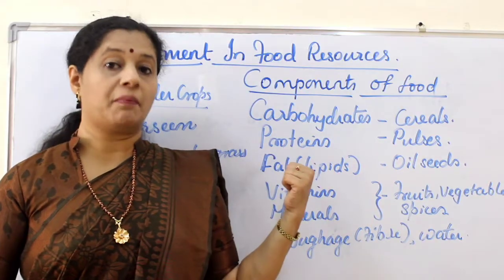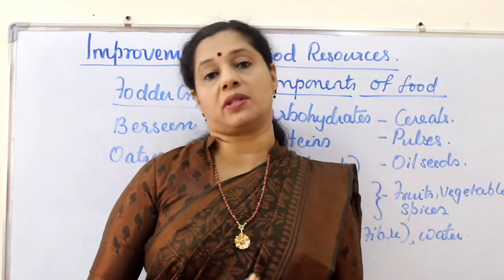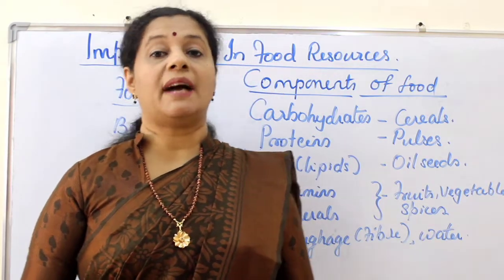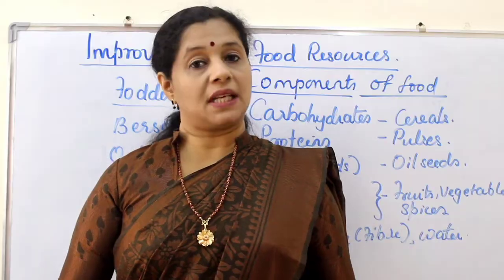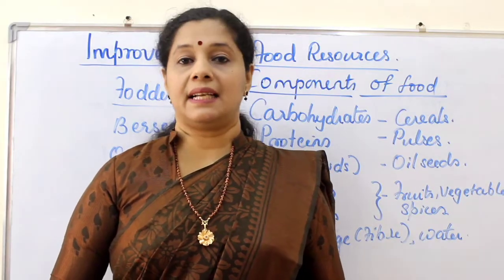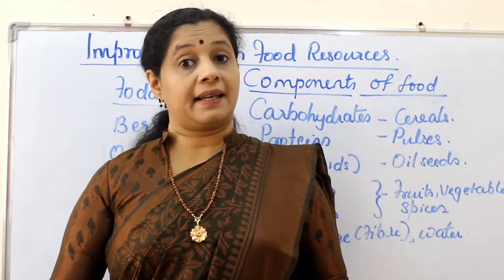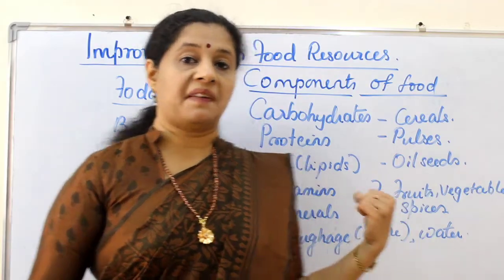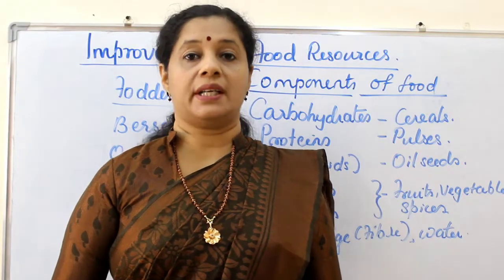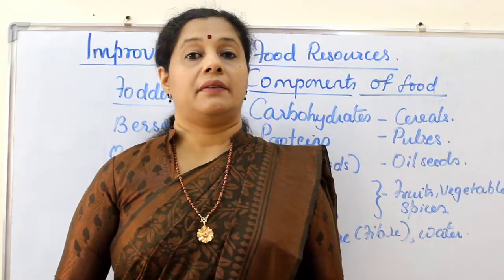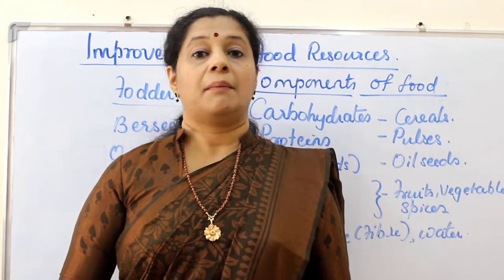The second major component of food is protein. Proteins are the building blocks of our body and are very important. In order to get proteins from plant sources we have to include pulses in our diet. Pulses include all the dal varieties like green gram, black gram, arhar dal, lentils, gram, and pea. The third component is fat or lipid. Lipids we get mainly through oil, so oil seeds are good sources. For example, we get oil from coconut, sesame, sunflower, corn, linseed, and mustard.